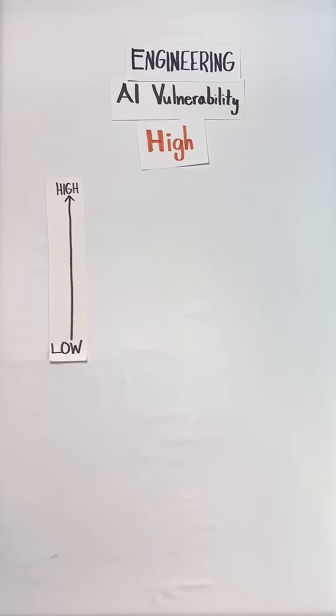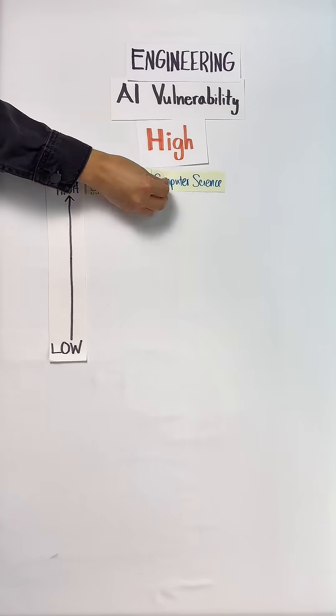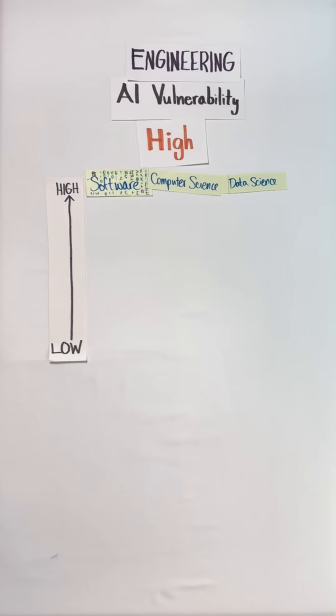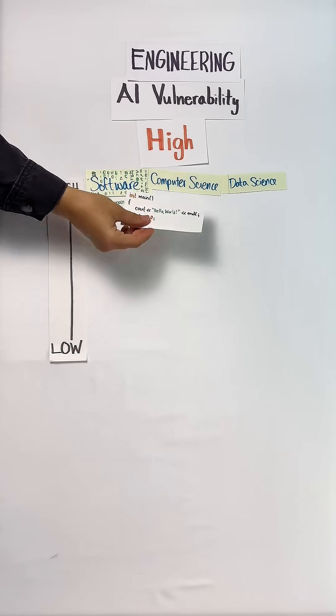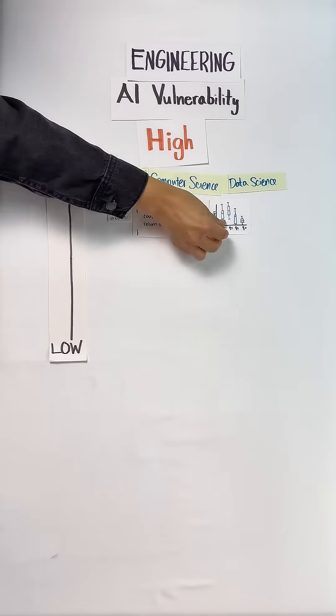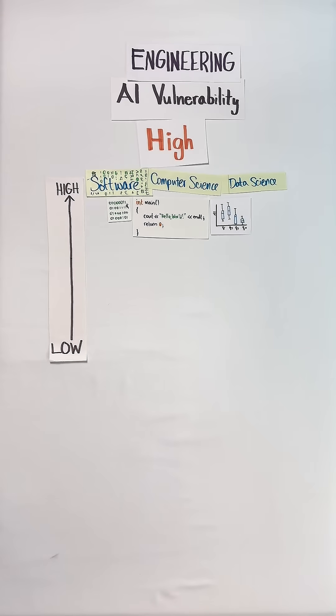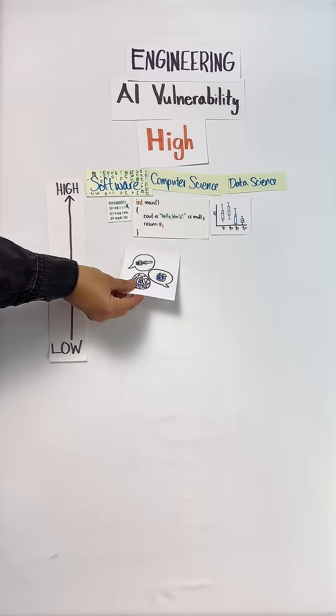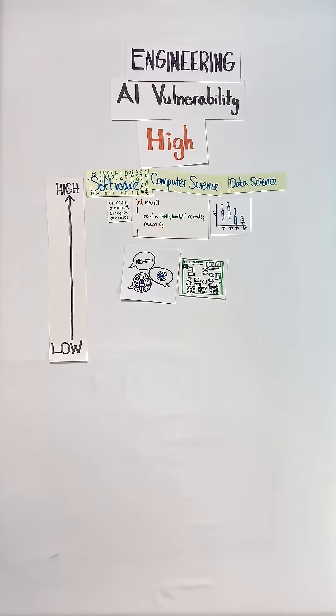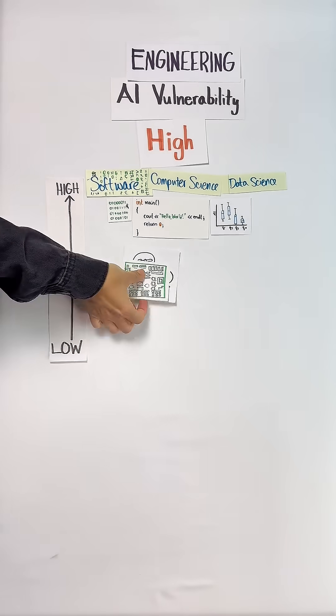Up here at the highest risk of total replacement: software, computer science, and data science engineering. Since AI can write, optimize, and test code, it's been eliminating droves of entry-level jobs for people in those fields. To help AI-proof yourself, if you're in one of these fields, lean more into high-trust specialties like cybersecurity and architecture.